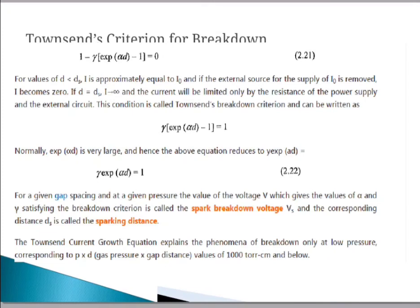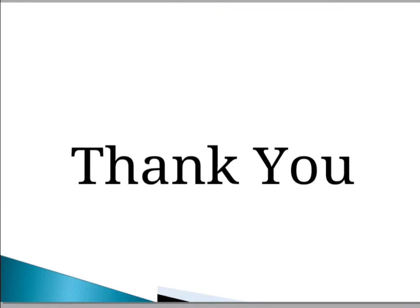Normally, exponential of alpha d is very large, so the breakdown equation reduces to gamma times exponential of alpha d equals 1. For a given gap spacing and at a given pressure, the value of voltage V which gives values of alpha and gamma satisfying the breakdown criterion is called the spark breakdown voltage Vs, and the corresponding distance ds is called the sparking distance. The Townsend current growth equation explains the phenomenon of breakdown only at low pressure, corresponding to p times d values up to 1000 Torr-centimeter.